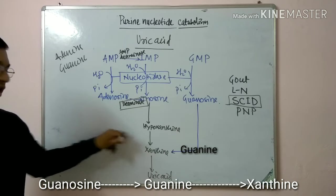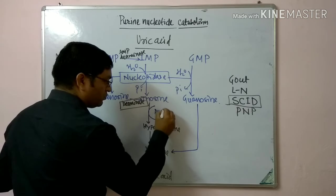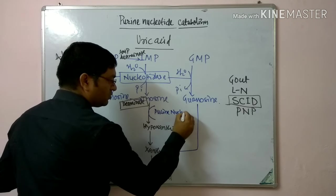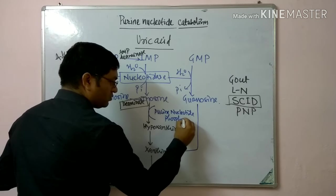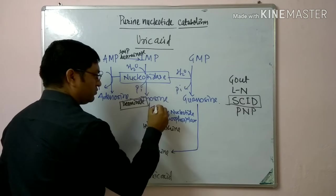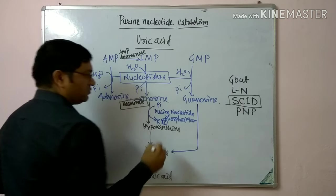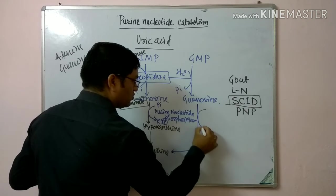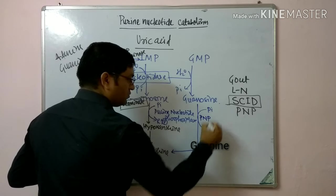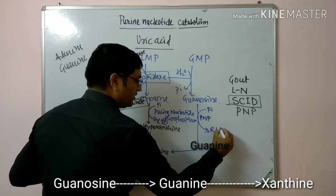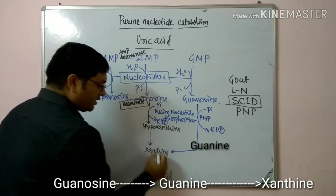Inosine is converted into hypoxanthine with the help of purine nucleotide phosphorylase, with release of ribose-1-phosphate. Similarly, guanosine gives xanthine via purine nucleotide phosphorylase with release of ribose-1-phosphate. So inosine gives hypoxanthine and guanosine gives xanthine.